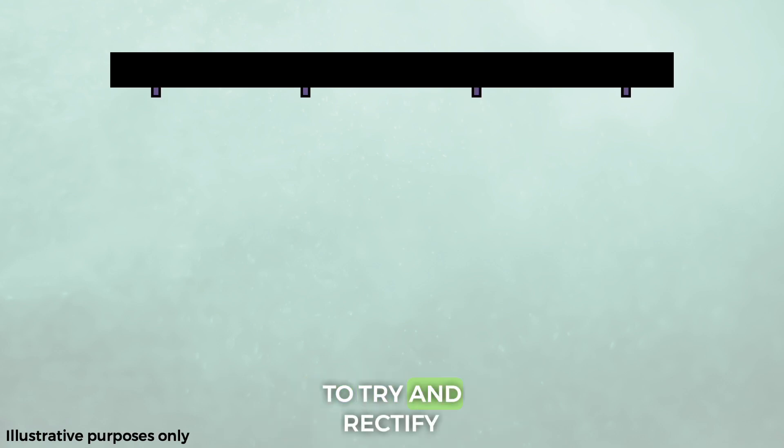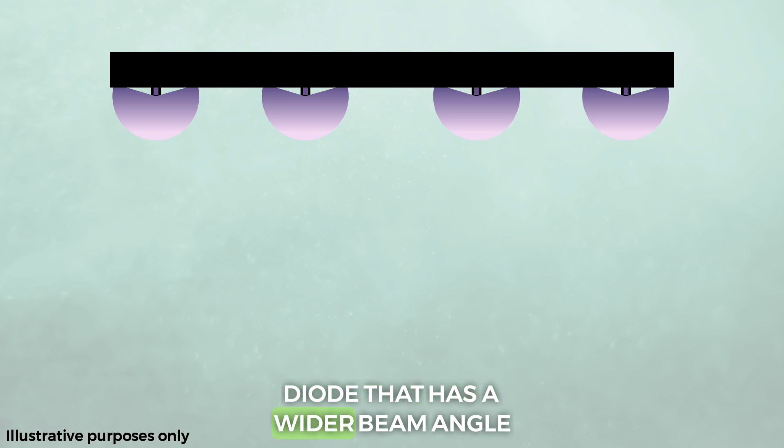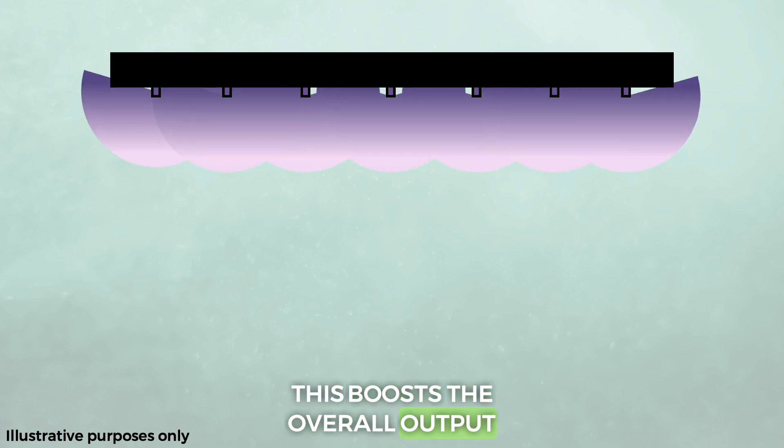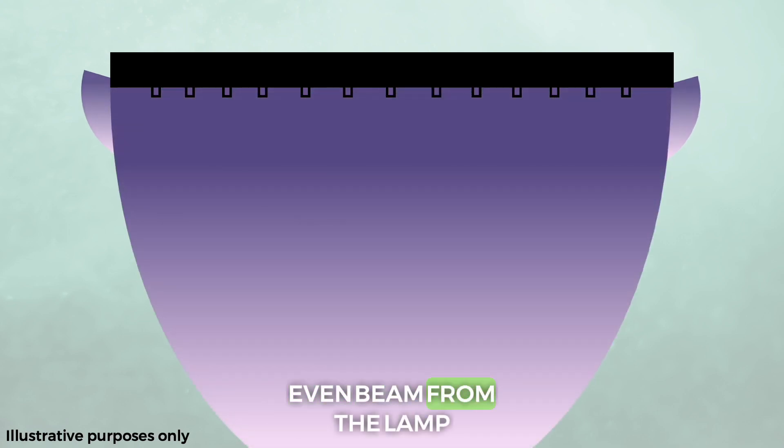Something that many companies do to try and rectify this is exactly what you'd expect. They use a different type of diode that has a wider beam angle. Because these diodes are spreading the UV out more sideways, they naturally aren't going to push the UV as far down. So the fix now is to add more diodes. This boosts the overall output because UV is additive and effectively creates a wide, even beam from the lamp.